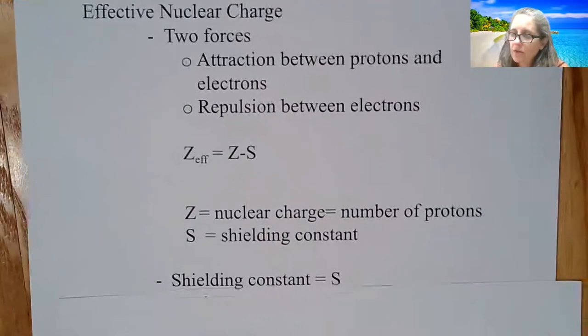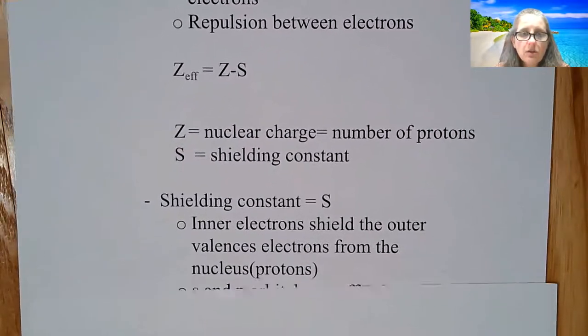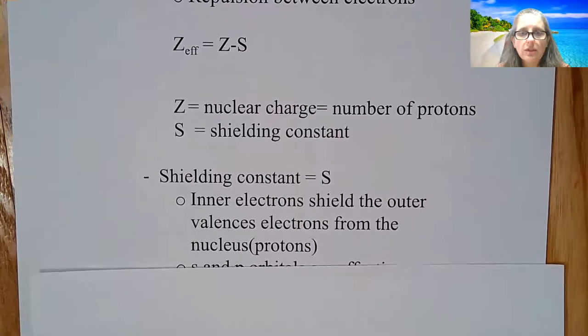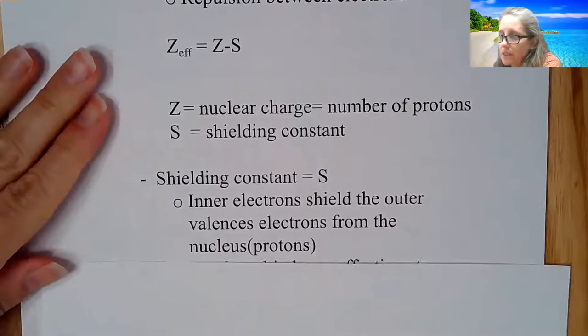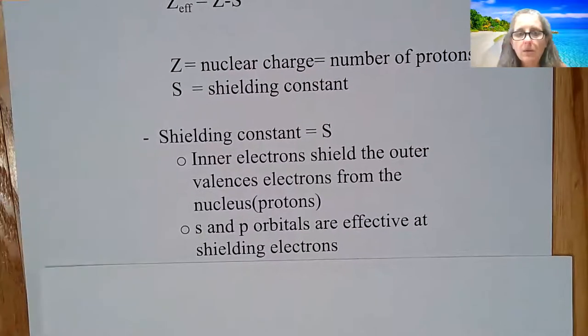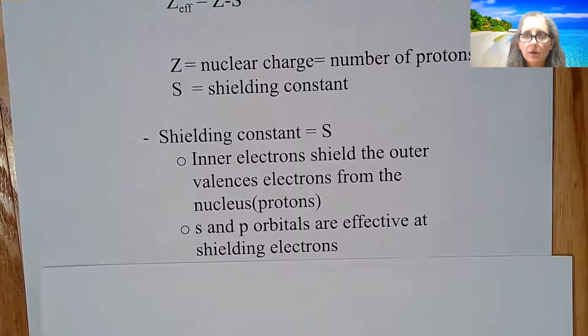So we have a shielding constant due to the inner electrons shielding the outer valence electrons from the nucleus. So with that shielding, what happens is the proton doesn't feel the electrons on the outermost energy levels. So therefore, they don't get pulled in as much. So typically, what you see are S and P orbitals are effective at shielding. So they do a very good job and those inner core electrons are going to be S and P orbitals. So they are very good at shielding.